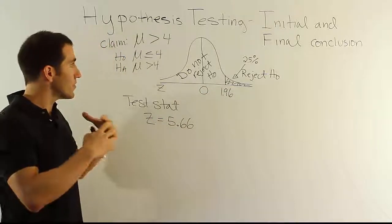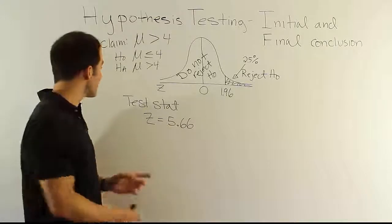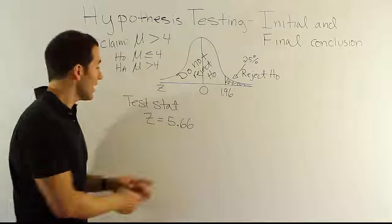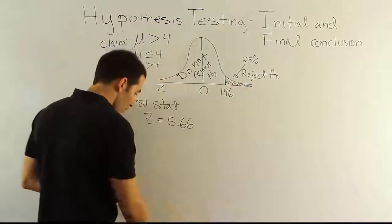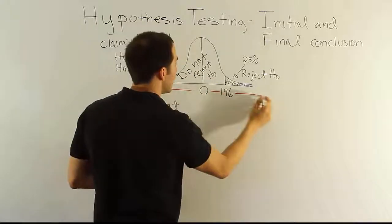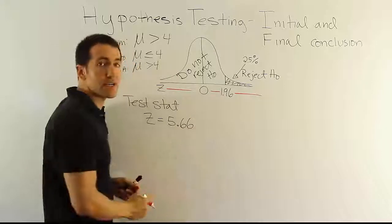In order to determine the initial conclusion of the test, it's a very simple procedure. We just have to plot this test stat on this z number line down below. If that test stat lands on the number line over here, we will reject H0. So should it land to the right of this point, this critical value, we will reject H0.